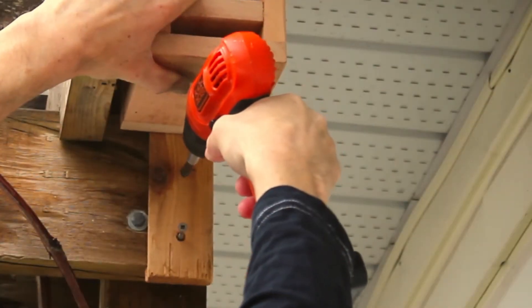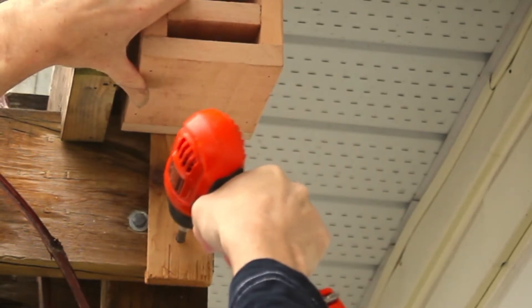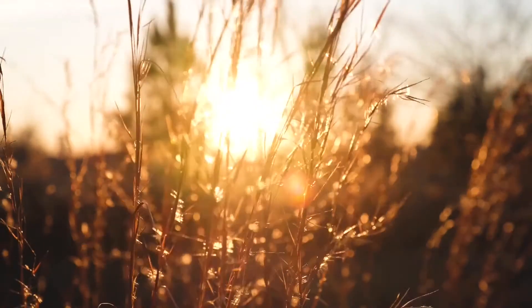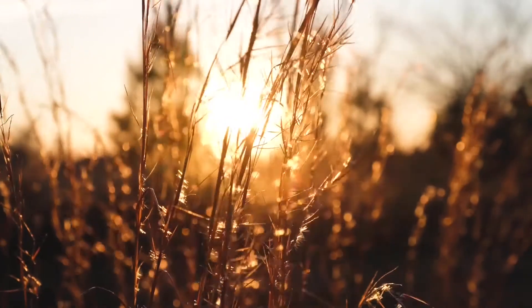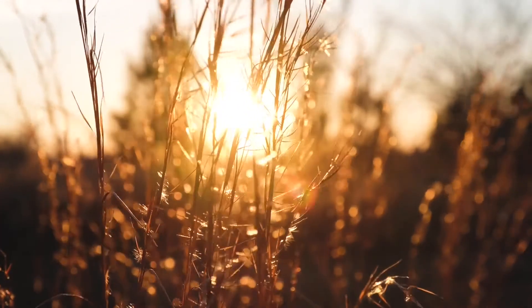There is no exact height to mount a mason bee house but anywhere between five and ten feet should work just fine. It should be under a covered area out of the rain and facing in an eastern or southeastern direction. The bees need the morning sun to warm up their wings before they can fly.